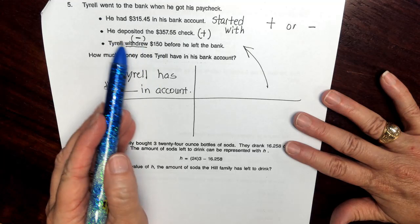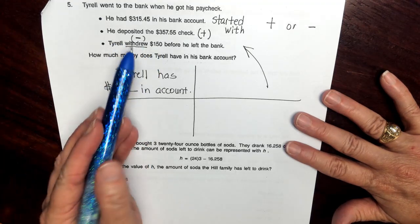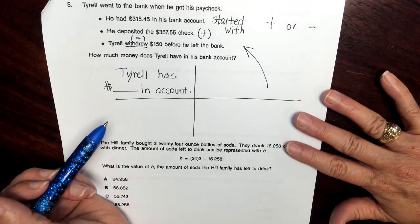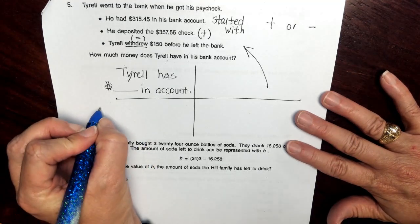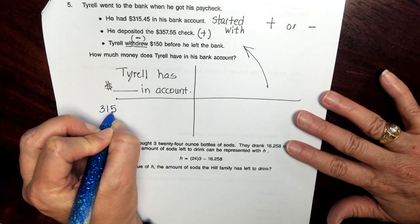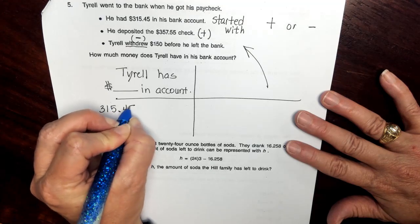I'm going to probably lay this out in GMA format, just because we have a lot of actions going on. So if we're thinking about what he started with, that's what we want to start with in our problem. $315.45.